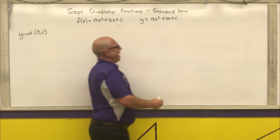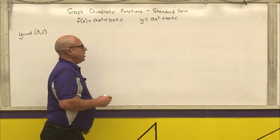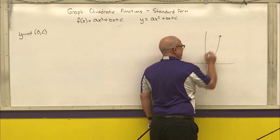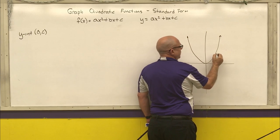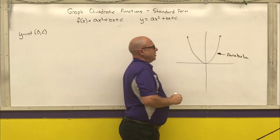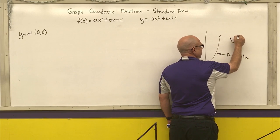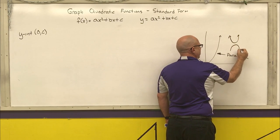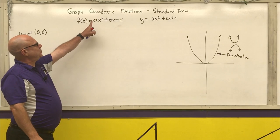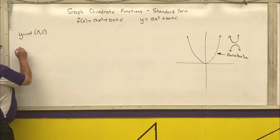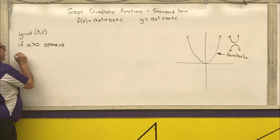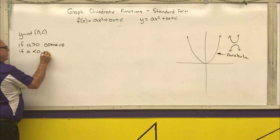All graphs of quadratic functions have the same shape, called a parabola. That parabola can either open up or open downward. The way you can tell whether it opens up or opens down is by the sign of a. If a is greater than zero, it opens up. If a is less than zero, it opens down.